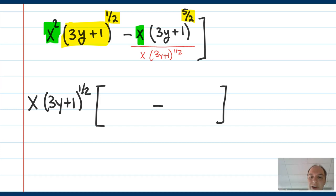3y plus 1 to the 5 halves divided by 1 half. I said everything would cancel out. This term is not going to cancel. But I am going to be able to do 5 halves minus 1 half, which is 4 halves or 2. So this term will just become, the x's will reduce with each other. 3y plus 1 to the power of 2, when I do 5 halves minus 1 half.